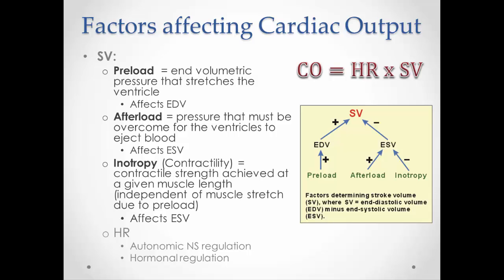Inotropy refers to contractility — how well the muscles contract independent of muscle stretch. Preload is about muscle stretch, lining up myosin and actin myofilaments to form more cross bridges. Contractility or inotropy has to do with calcium levels: more calcium in the muscle cell means more cross bridges, which means better contractions, increasing inotropy and therefore increasing stroke volume.